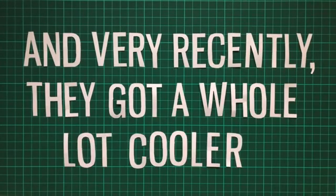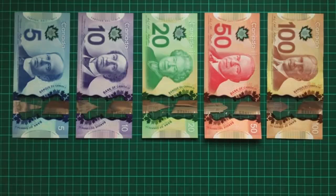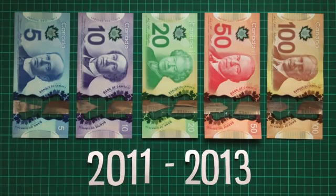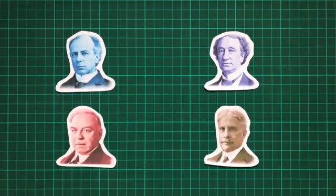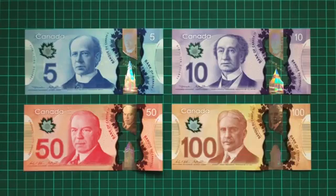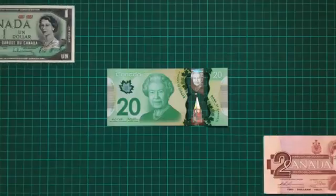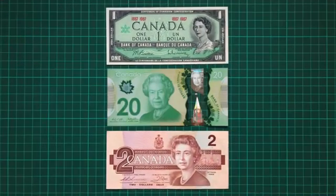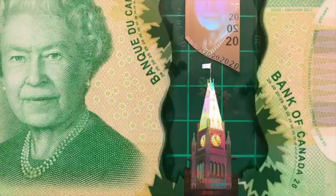And very recently, they got a whole lot cooler. But let's start with the current notes. This is the Frontier series, released from 2011 to 2013. Four out of the five denominations feature a former Canadian prime minister on the front. The only exception being the $20 bill which features the Queen instead, who's appeared on Canadian banknotes throughout her life. In the transparent window, a different building from parliament can be seen on each.